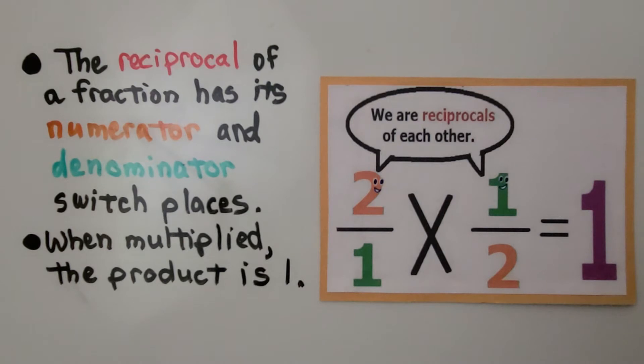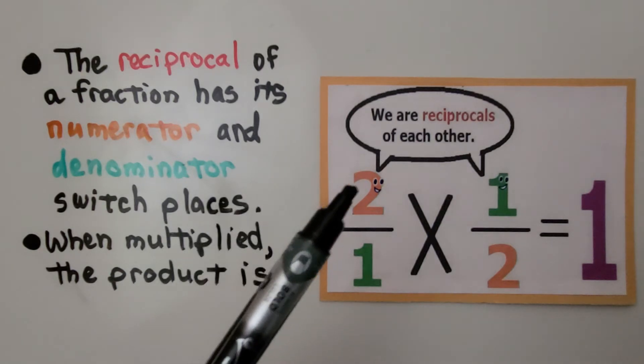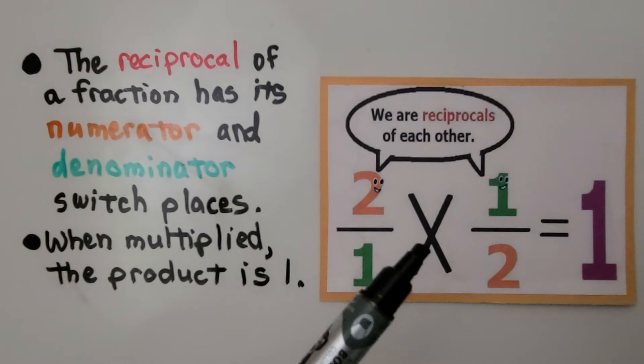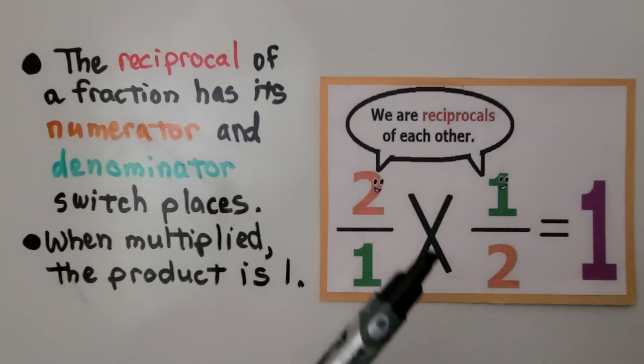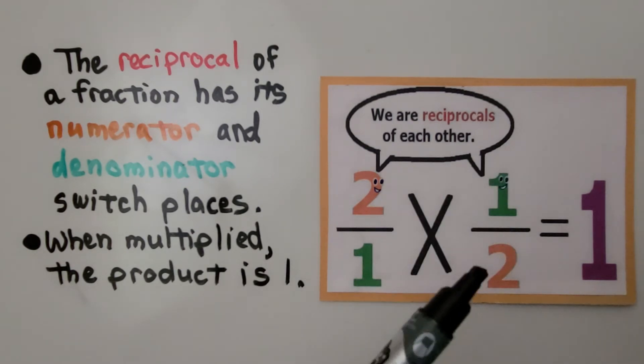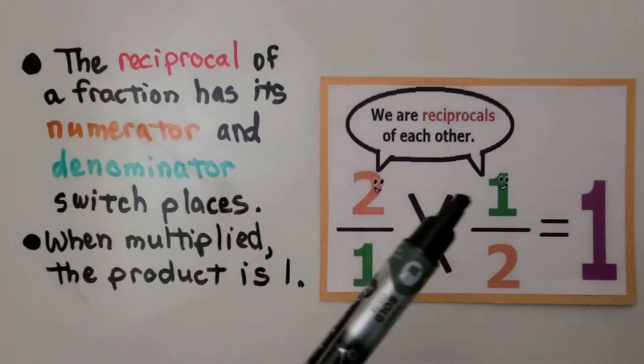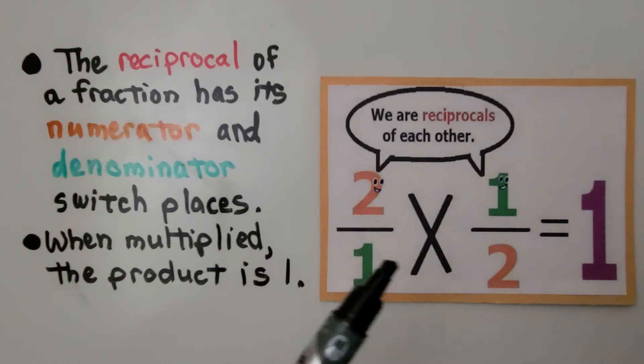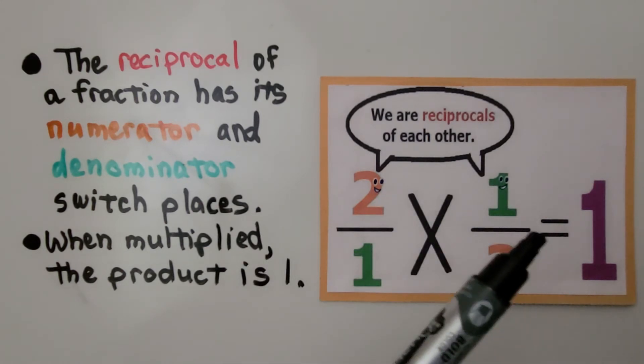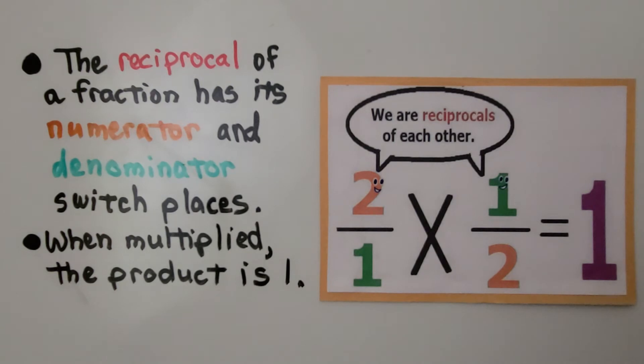The reciprocal of a fraction has its numerator and denominator switch places. When multiplied, the product is 1. Here we have 2 over 1. If we multiply it to 1/2, its flipped upside-down version of itself, we'll have 2 times 1 is 2, and 1 times 2 is 2. We have 2 halves. That's equal to 1 whole.